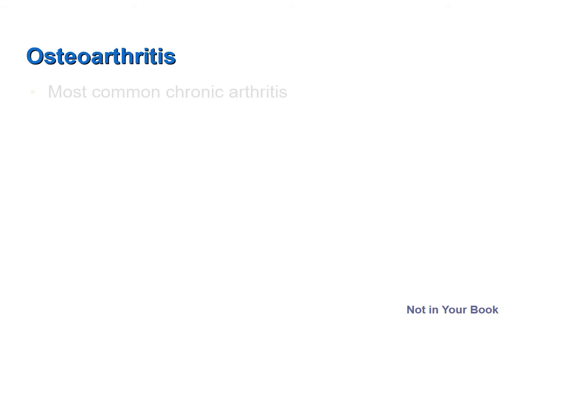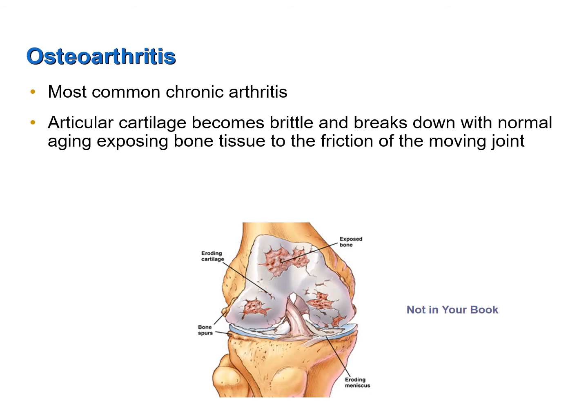Osteoarthritis is the most common type of chronic arthritis. As we age, the articular cartilage in our synovial joints becomes brittle and tends to break down. For that reason, osteoarthritis is often referred to as wear and tear arthritis. As the cartilage breaks down, the underlying bone tissue is exposed to the friction of a moving joint. That bone tissue contains quite a large density of nerves, which is responsible for the pain that comes with osteoarthritis.